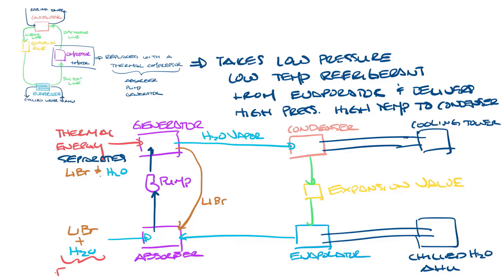The absorption process is exothermic, meaning it generates heat. This heat must be rejected from the absorber to the condenser water and cooling tower loop. Because of this additional heat reject load, absorption chillers require a larger cooling tower compared to a mechanical chiller with the same capacity.